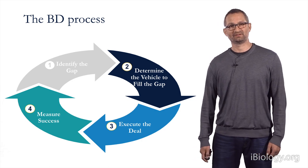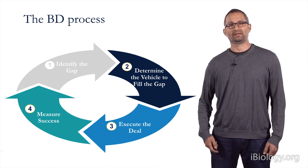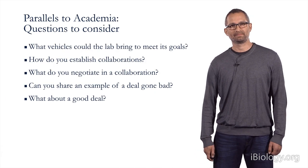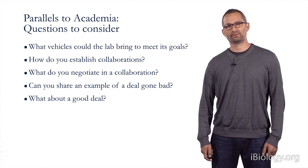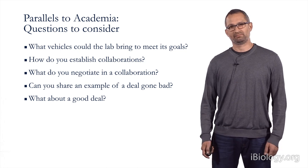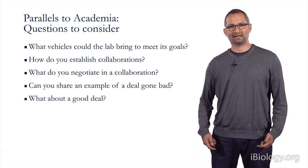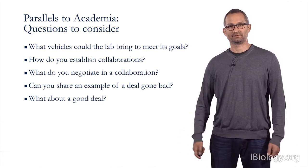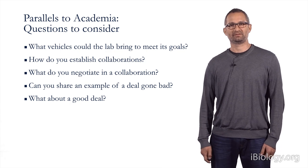In the second half of the presentation, you learned about how companies determine which vehicles can best fill a particular gap, how they execute that deal, and then measure the success. When considering parallels to academia, it's important to think about what sort of vehicles a laboratory can bring to bear to meet its goals. One of the most important vehicles is collaboration, or essentially partnering — this occurs when a laboratory has a particular need they cannot address internally, either due to cost or lack of expertise, making it important to consider which other laboratories one might partner with to achieve goals.